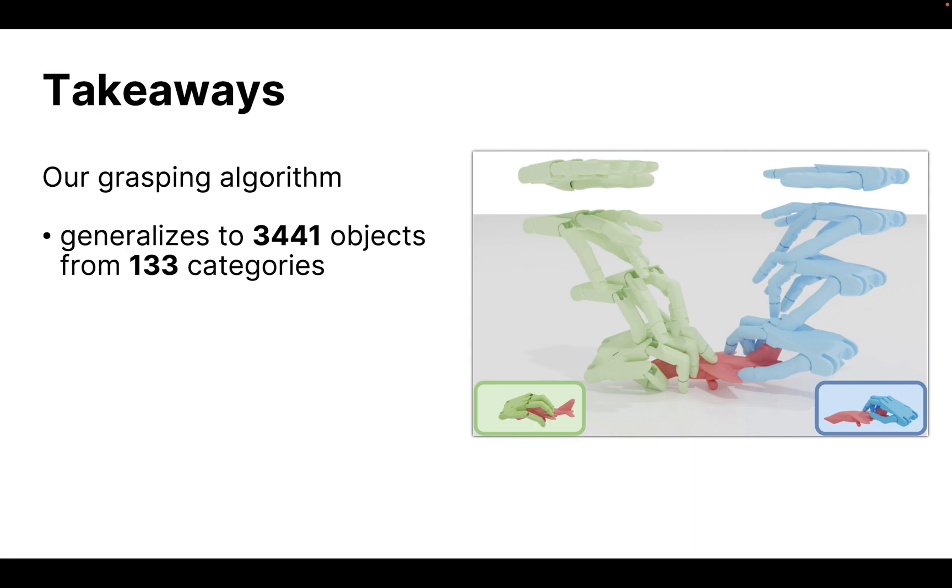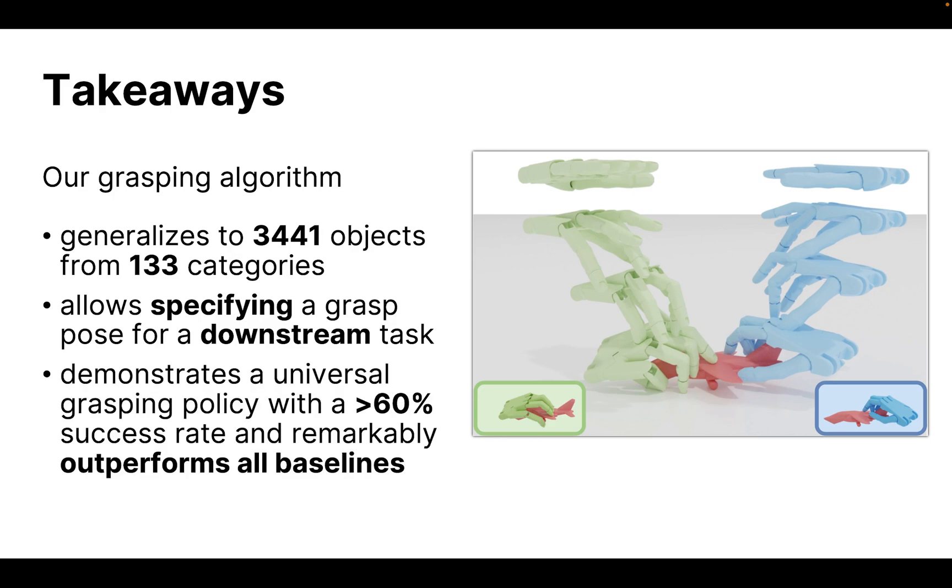Here are the takeaway messages of our paper. First, our model can generalize to 3,441 objects from 133 categories. Second, this algorithm allows specifying an intermediate grasp pose for execution, which adapts well to downstream tasks. Third, the overall performance has a more than 60% success rate and outperforms all baselines.